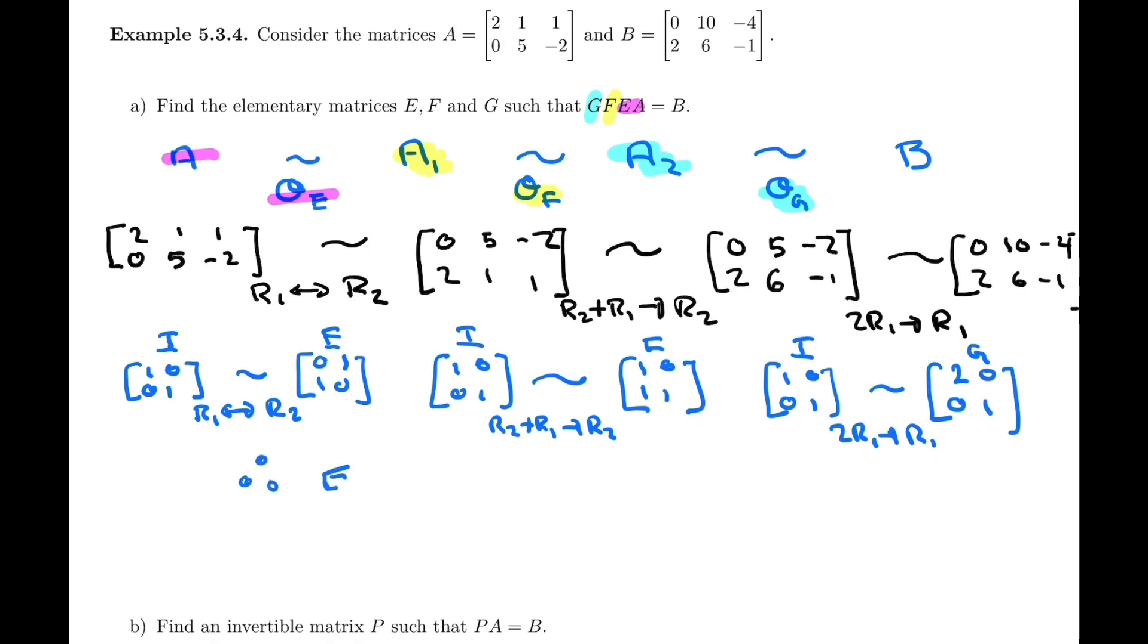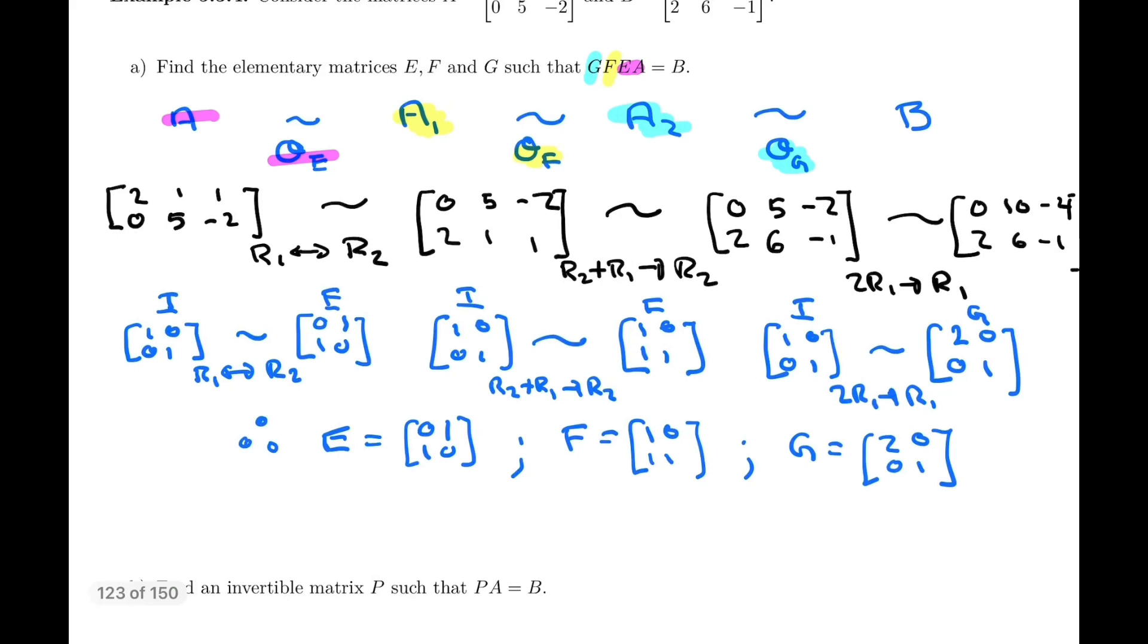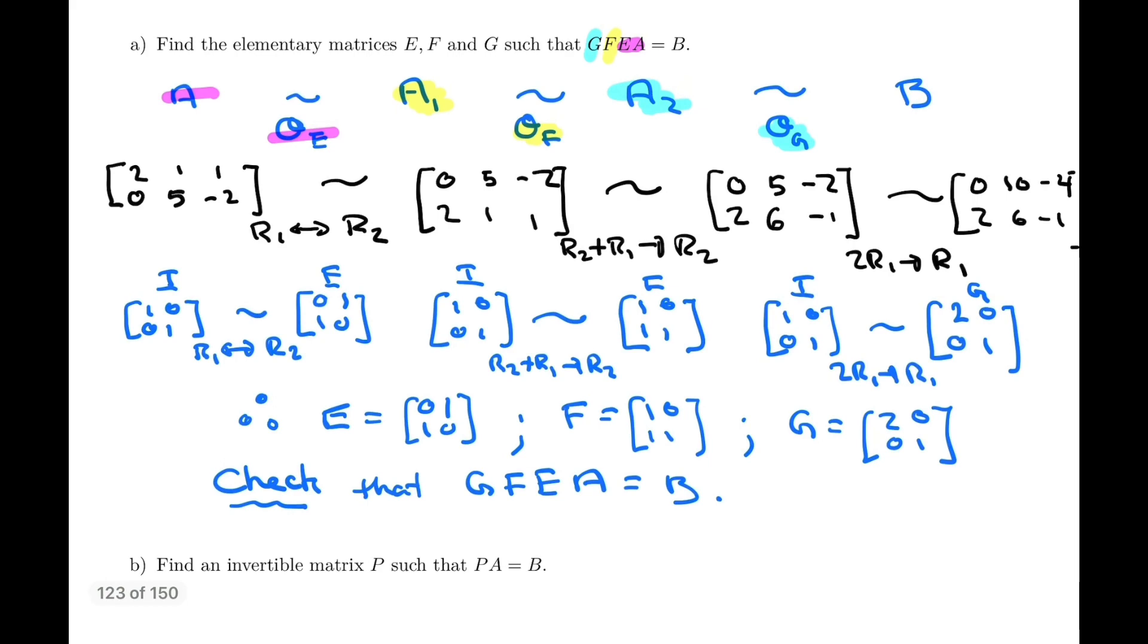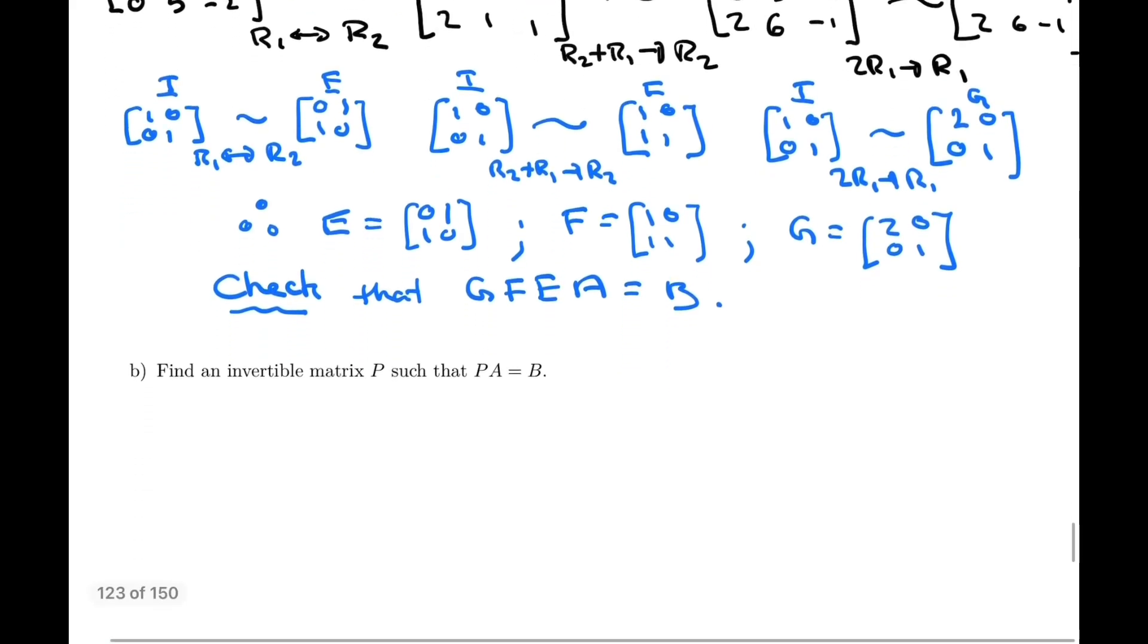So the three matrices we were looking for are E equals 0, 1, 1, 0. Matrix F equals 1, 0, 1, 1. And matrix G is equal to 2, 0, 0, 1. Now, I'm not going to multiply them because we're going to do that in part B regardless, but if you were doing this exercise, it would always be wise to check that when you multiply them out, GFE times A equals B. You can do that as an exercise, but actually we're going to do it in part B.